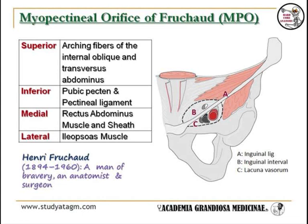The Myopectineal Orifice of Fruchaud is an egg-shaped region which is neither fully nor efficiently covered nor reinforced by muscle layers. It was named after French anatomist Henri Fruchaud. It is bounded superiorly by the arching fibers of the internal oblique and transversus abdominis, inferiorly by the pubic pecten and pectineal ligament, medially by the rectus abdominis muscle and sheath, and laterally by the iliopsoas muscle.